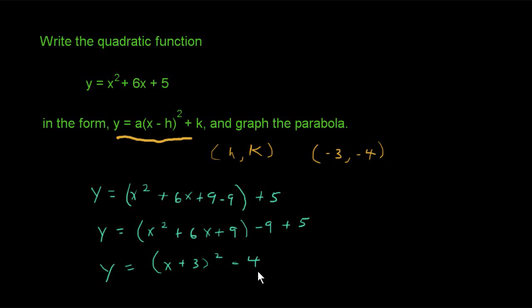And now it is in the vertex form, but not quite, because notice that we need to have a minus h there. So we'll rewrite it as x minus a negative 3 squared minus 4. And now it's in vertex form, and our a value is 1, our h value is negative 3, our k value is negative 4.